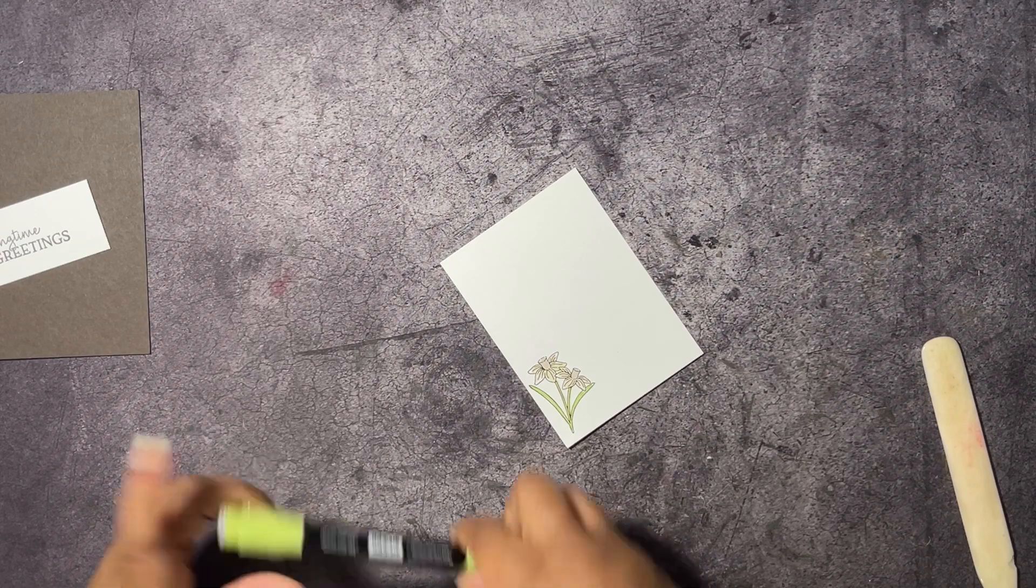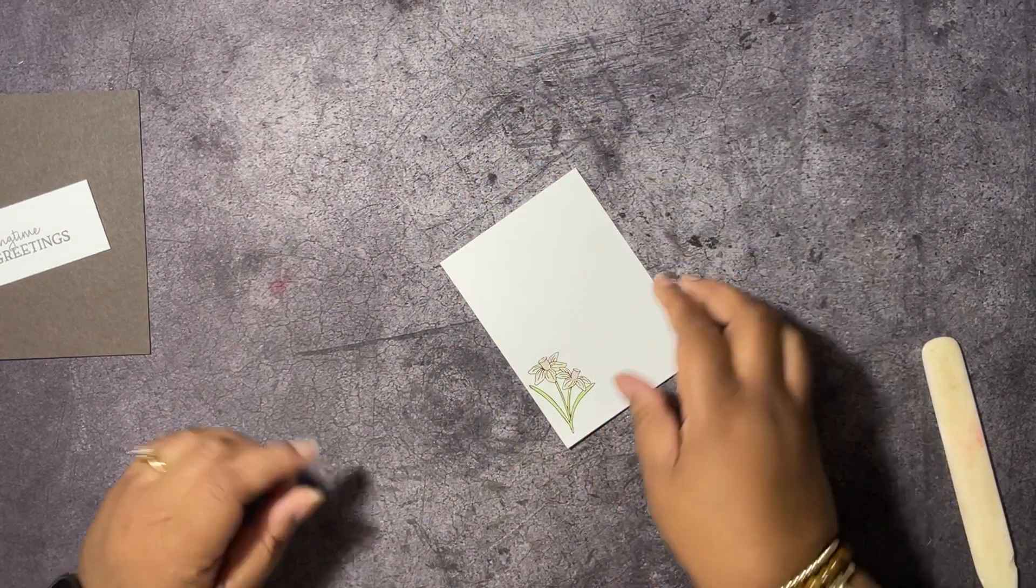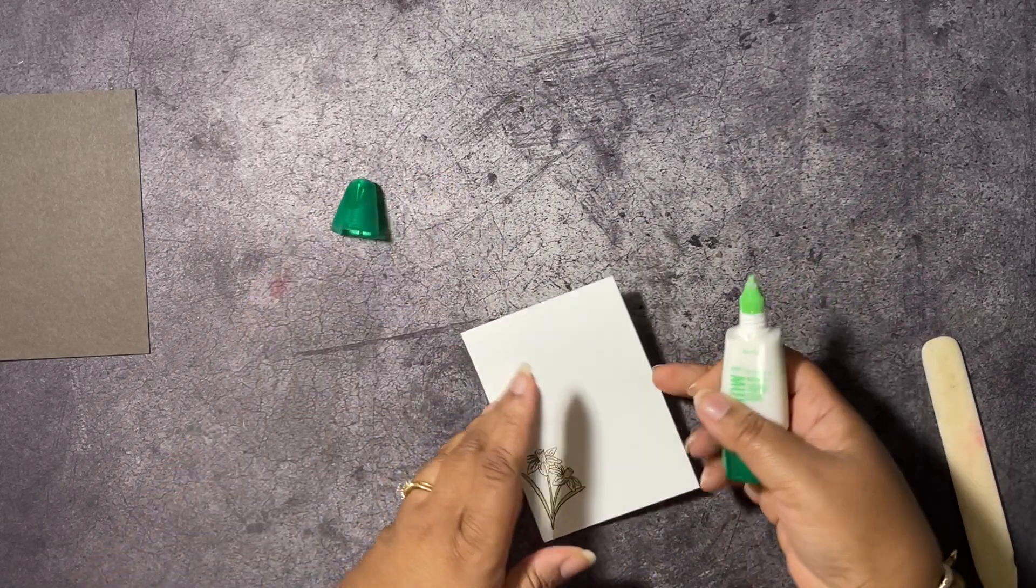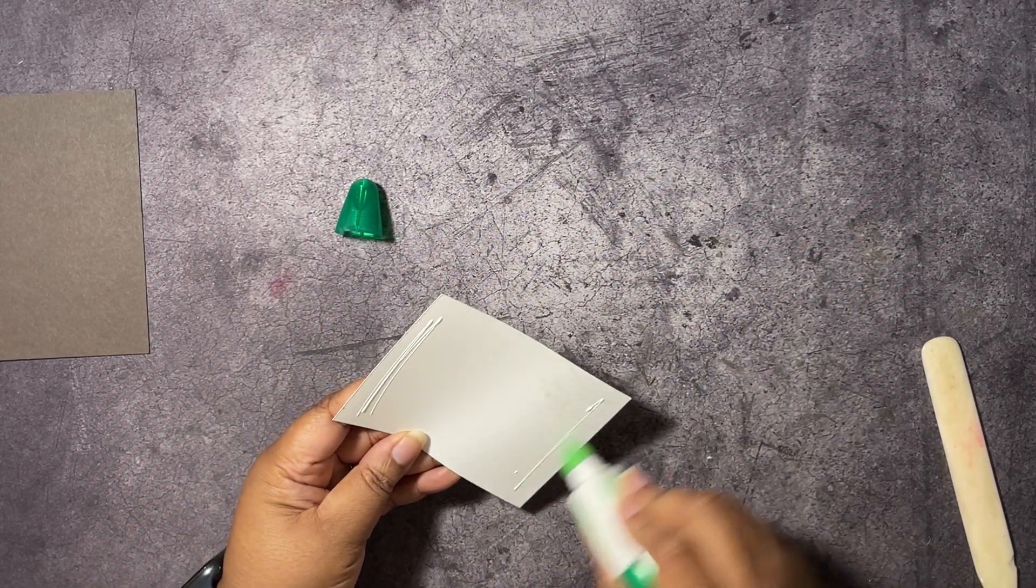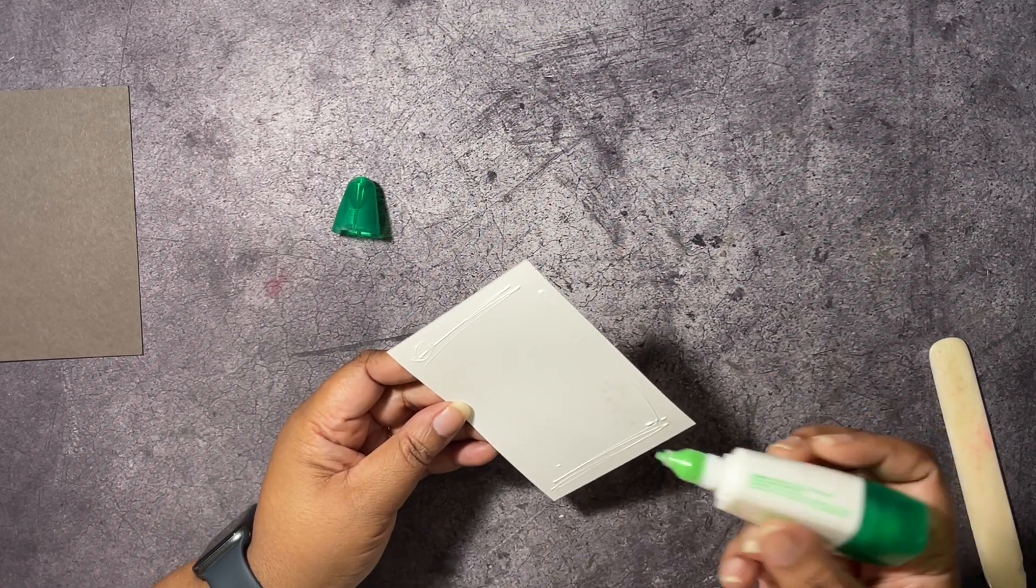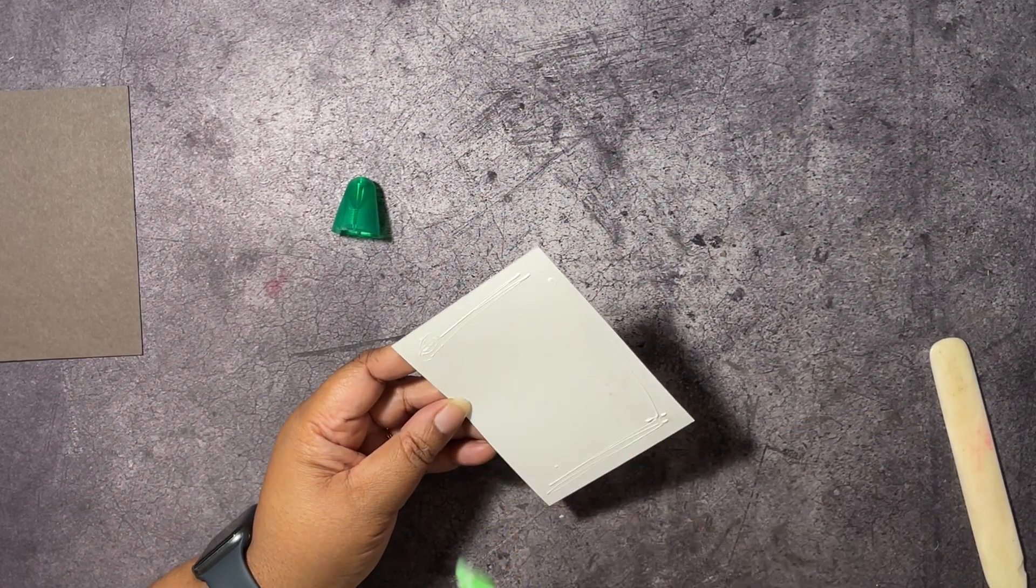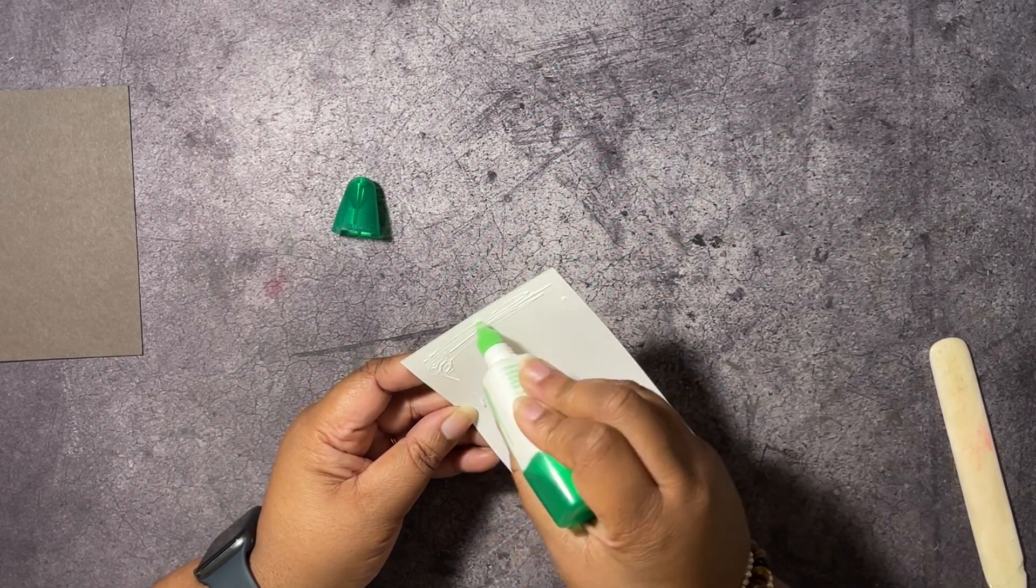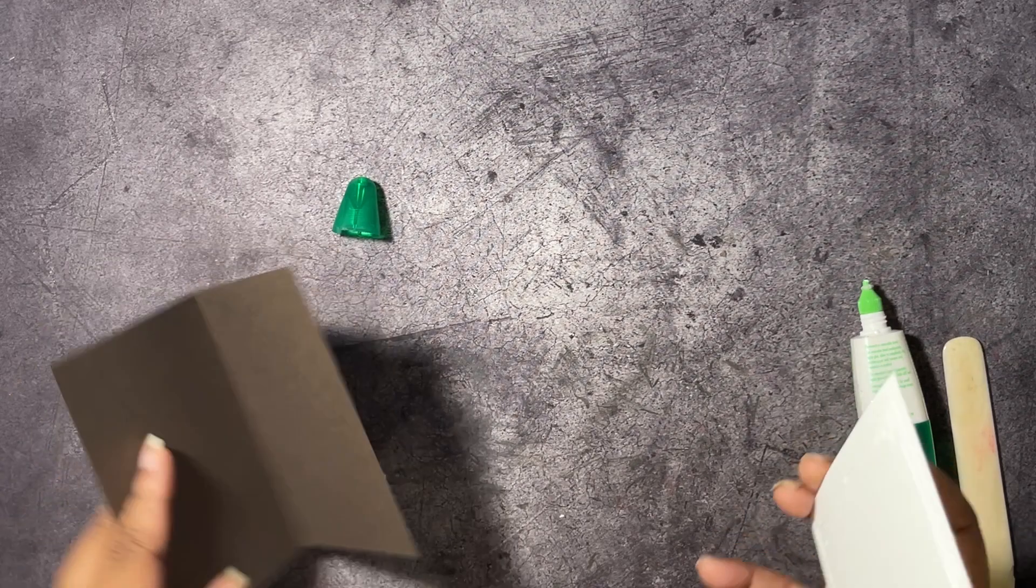I hope you guys are enjoying this series of my alternates for this Paper Pumpkin kit. This is I believe project number nine out of ten. If you haven't seen videos one through eight, please go back and watch those. We're going to just glue this inside of our card base here.